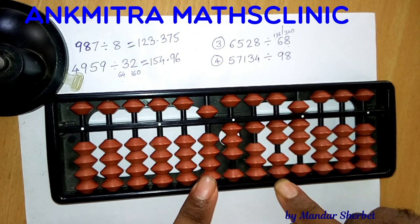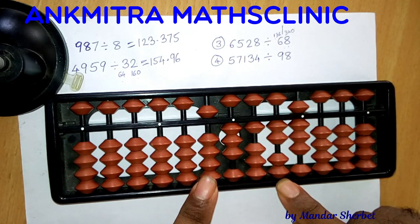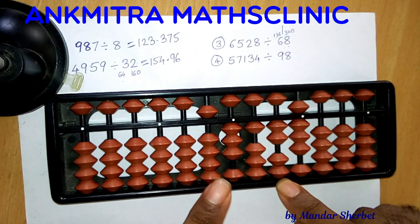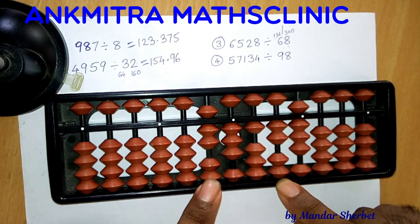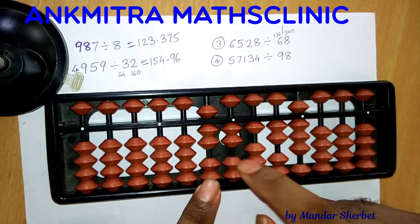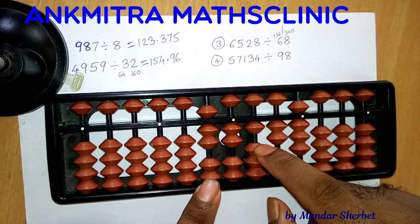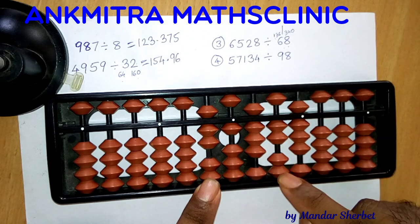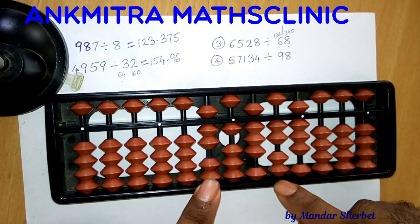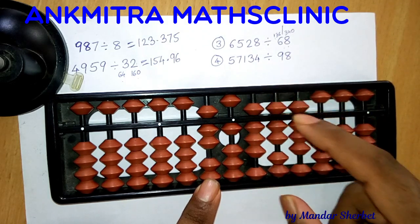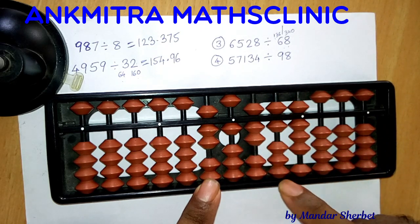From 312, we can still subtract 2 times 68, which is 136. So I'll add 2 on the answer rod and subtract 136 from 312. For subtracting 1 on this rod, for subtracting 3 I'll do plus 7 minus 10, and for subtracting 6 I'll do plus 4. After subtracting 136, we still have 176 remaining on this rod.